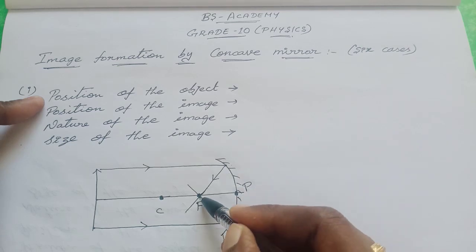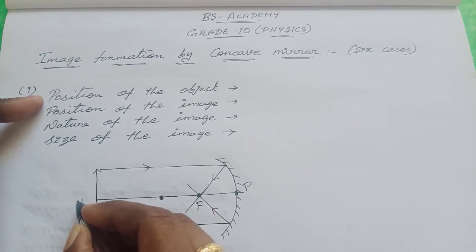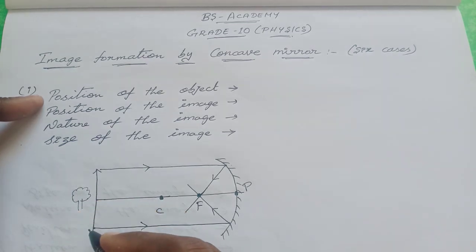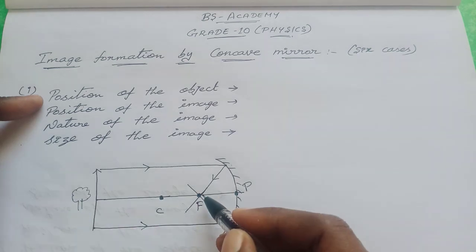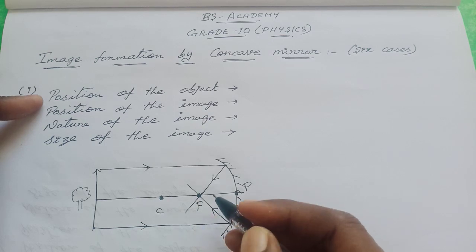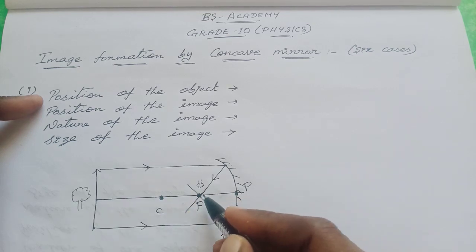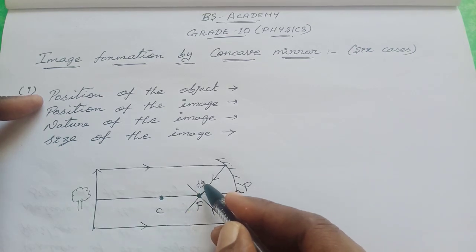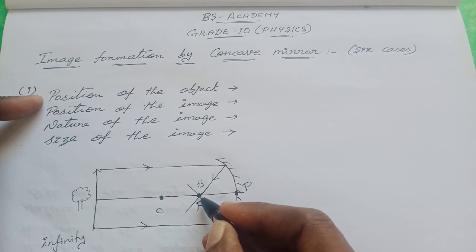We can obtain the image at this particular point. For example, when the object is placed at infinity — imagine a tree at infinite distance from this mirror — this object will be obtained as an image at this particular point F, on the white screen. We will get the inverted image of the tree at point F when the screen is placed at this point. So when the object is placed at infinity, the image is formed at the principal focus, at F.